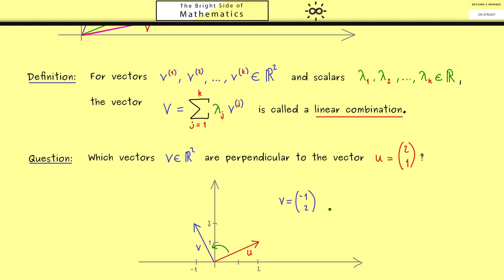So we say v is orthogonal to u. However this can't be the only one because we can scale v and still are in the same direction. Hence we can just introduce a vector λ here, and then we have all the vectors that are perpendicular to u.